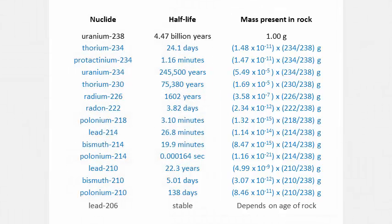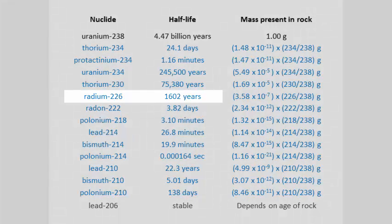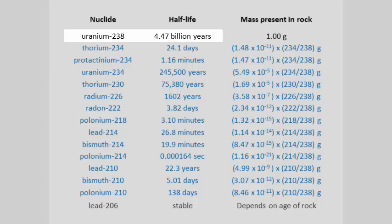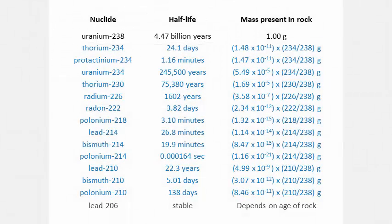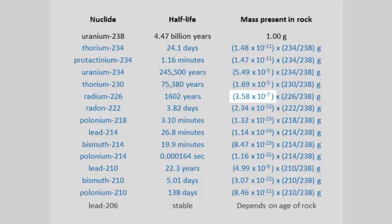For example, take the half-life of radium, 1600 years, and divide it by the half-life of U-238, 4.5 billion years, and you get this result, which is about one part in three million. That's the ratio of radium atoms to U-238 atoms present in the rock.